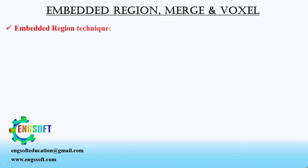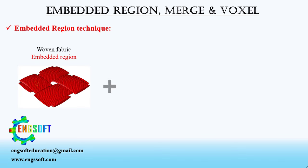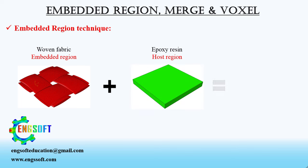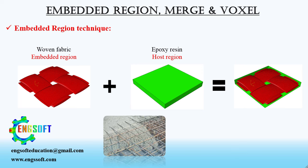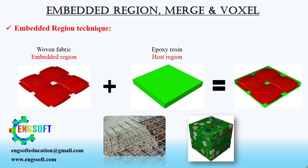An embedded region constraint allows you to embed a region of the model within a host region of the model, or within the whole model. For instance, you can embed a fiber in a polymer matrix, embed FRP rods in a concrete matrix, or embed nano or micro particles in a polymeric or metallic matrix. And there are more examples like these.